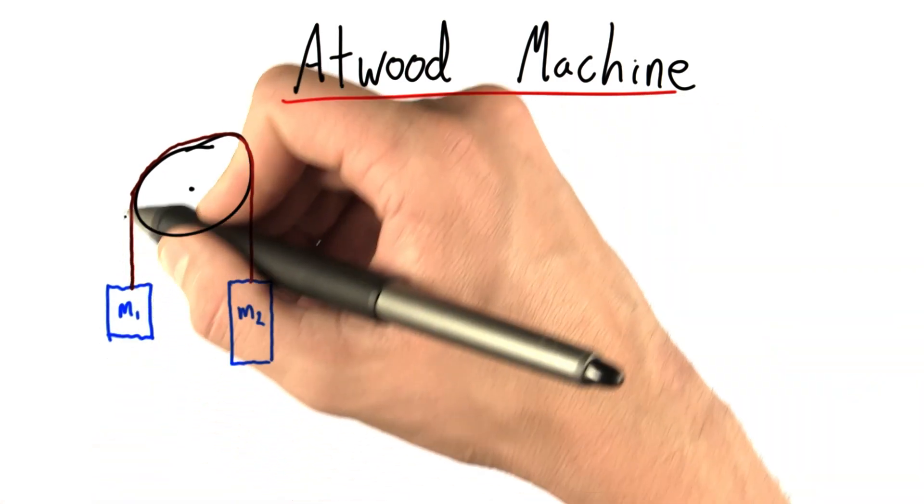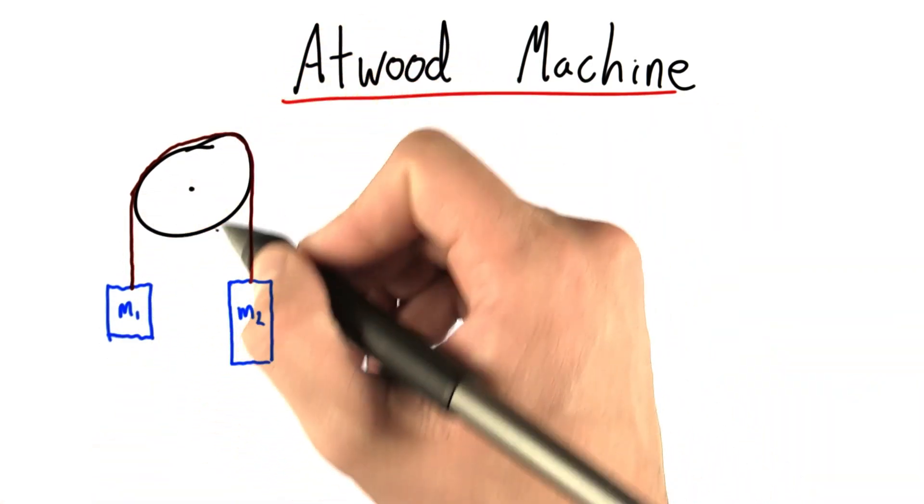This problem involves two masses connected by a string, which is draped over this pulley, so it's free to rotate.